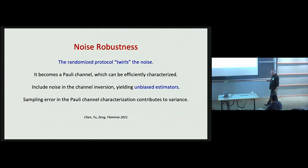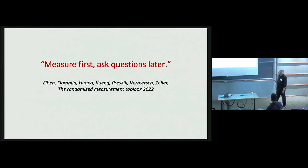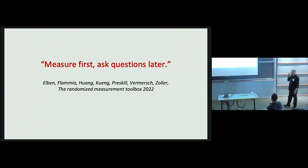In a recent review we distilled the philosophy of such randomized measurement protocols to an aphorism: you don't need to know at the time that you measure the samples what target properties you're going to be interested in. So you can measure first and ask questions later. In fact, many of the applications of classical shadows over the last few years have involved reanalyzing data taken in quantum experiments where originally there was a different purpose in mind.